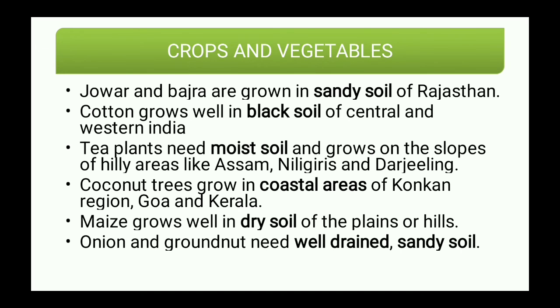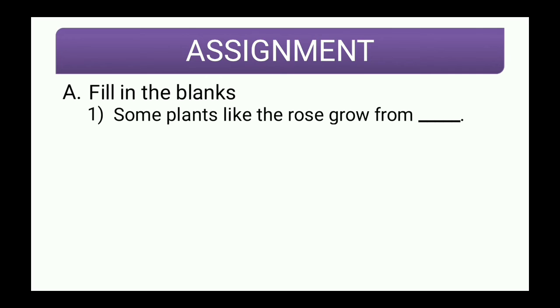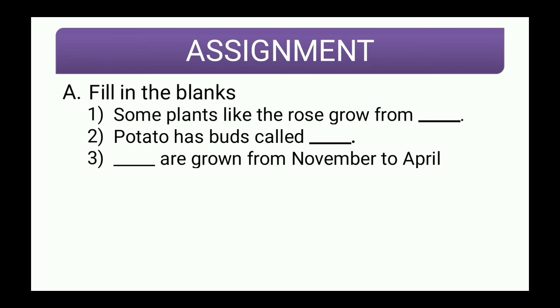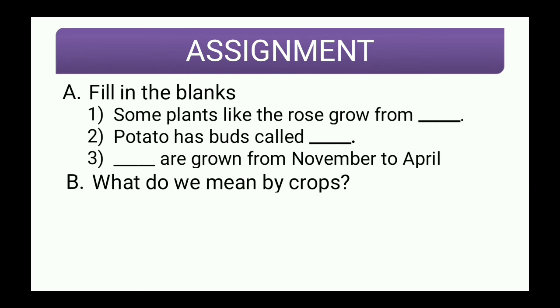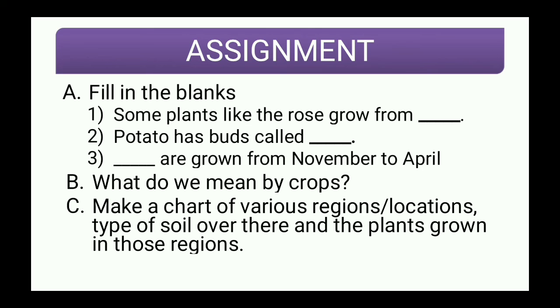That was all for today. Today's assignment consists of fill-in-the-blanks: first, some plants like rose grow from blank; second, potato has buds called blank; third, blank crops are grown from November to April. Question B: what do we mean by crops? Question C: make a chart of various regions, type of soil, and the plants grown in those regions. Hope you enjoyed today's video — if you have any doubts, please ask. Stay healthy, see you again, goodbye and have a nice day!